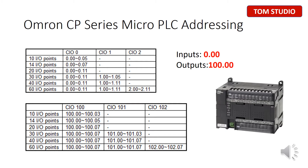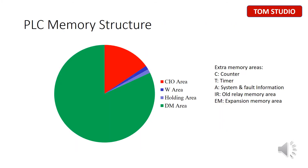Inputs start from 0.00. Outputs start from 100.00. In this slide, we go over a little bit about the Omron CP Series PLC memory structure as shown.